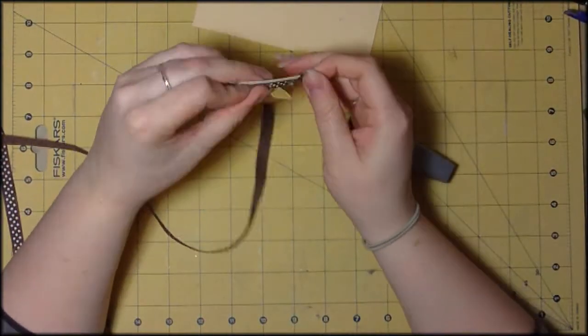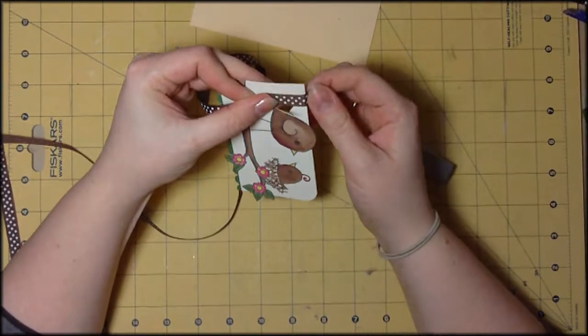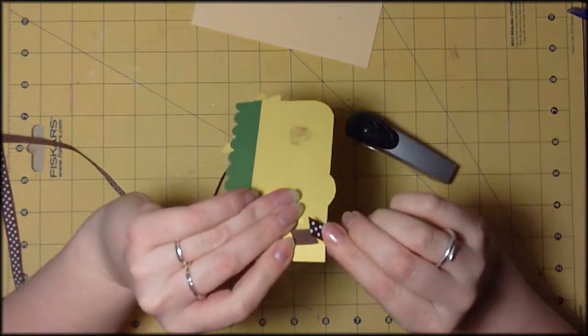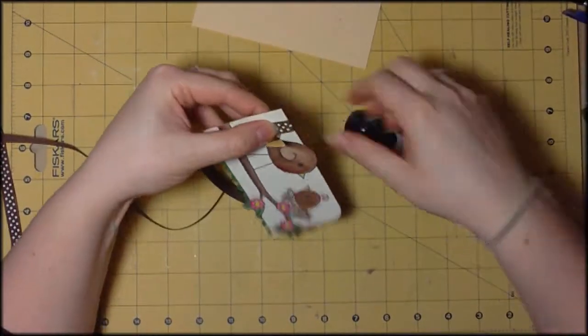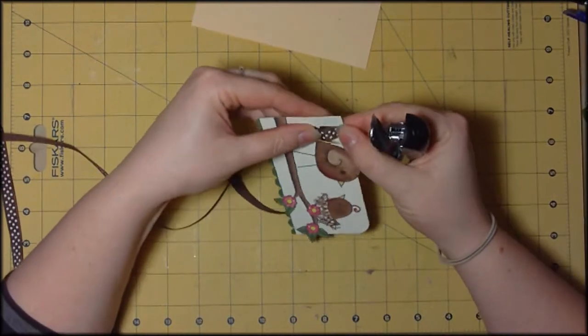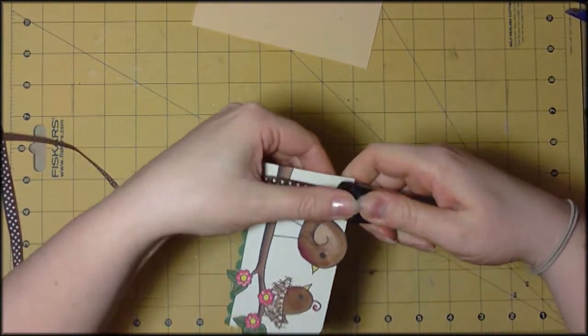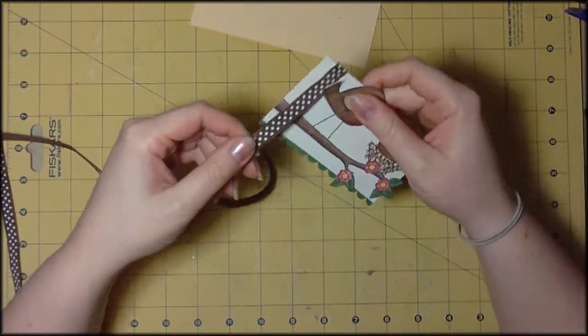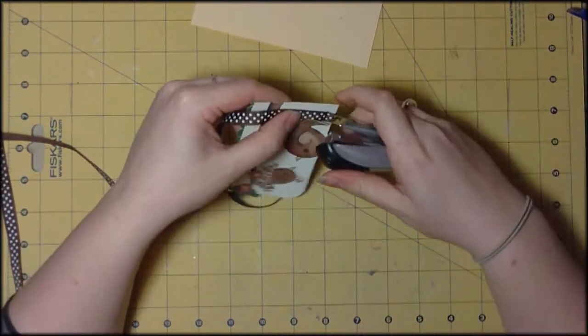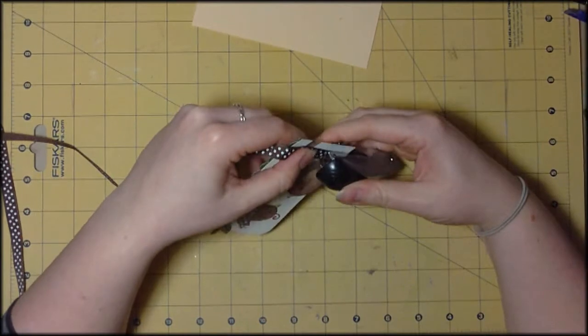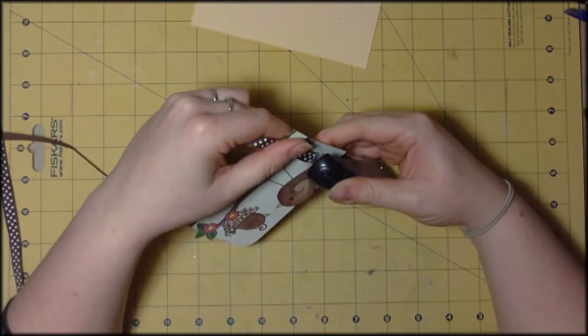Here I've just got some polka dot ribbon and I've folded it over where I want it to start and I'm just going to staple along here. This is a technique I saw Christina Werner do quite a while back now and I quite like it so I keep coming back to it. It's just something different to do instead of tying a knot or a bow.